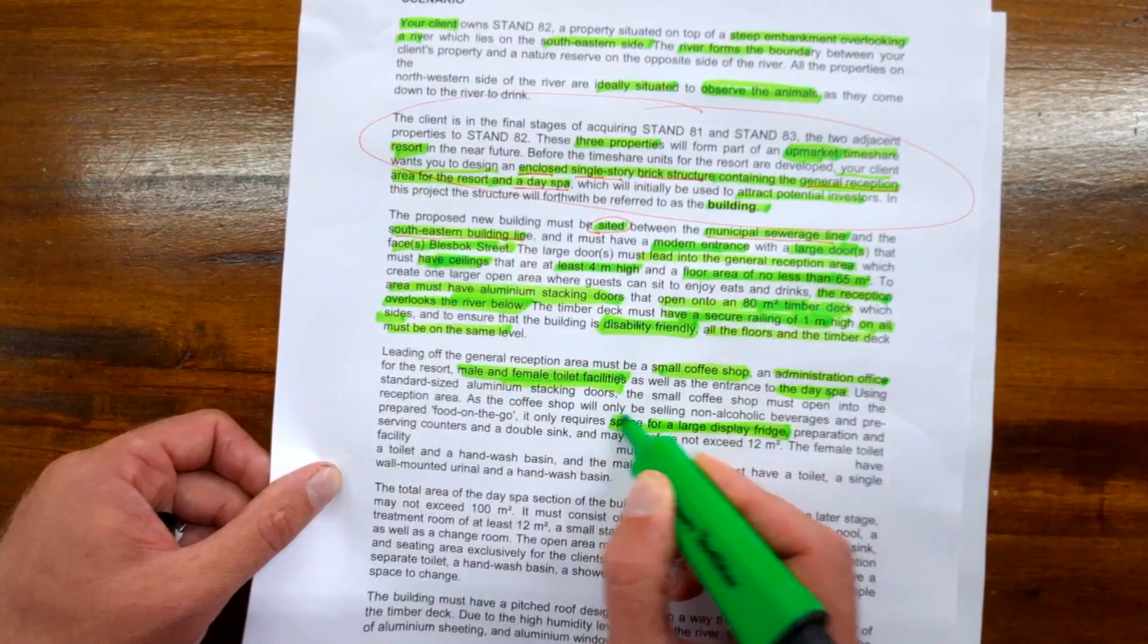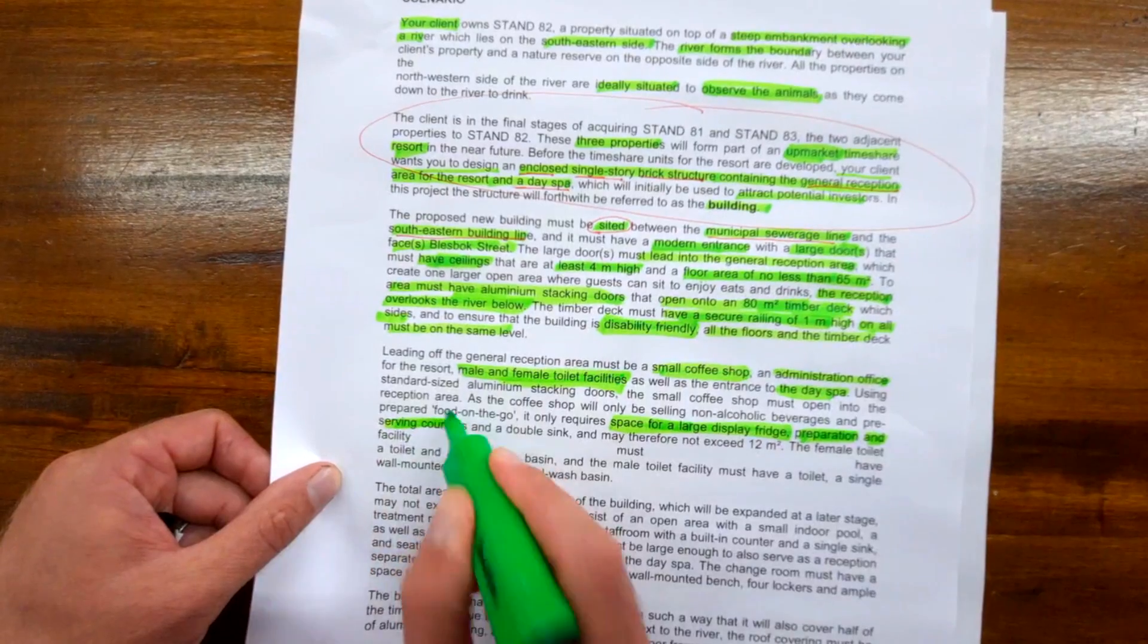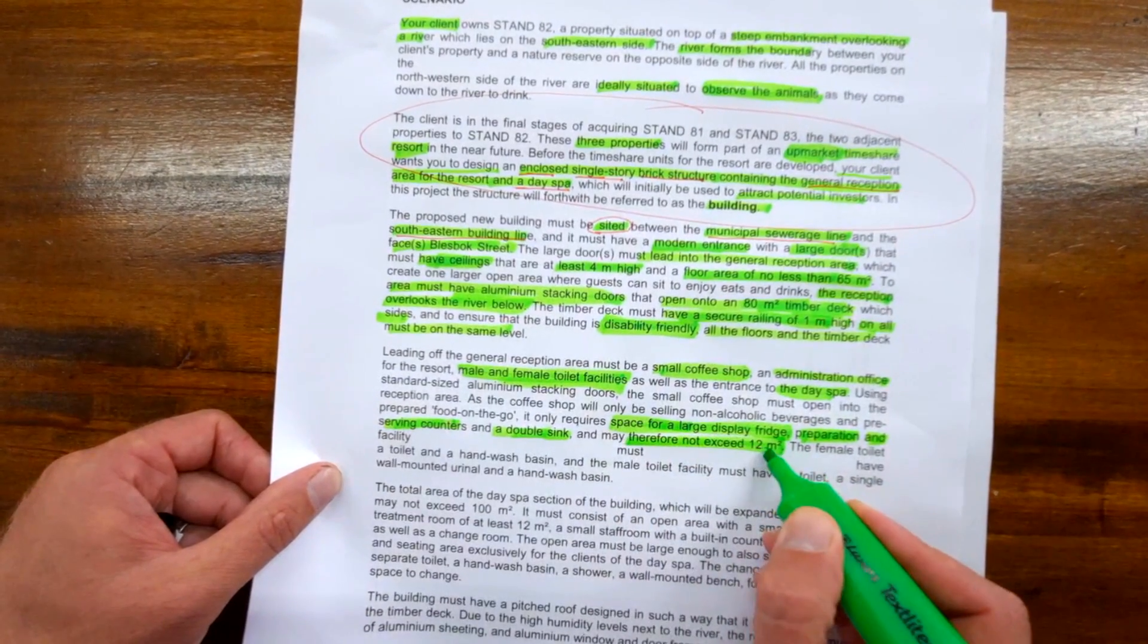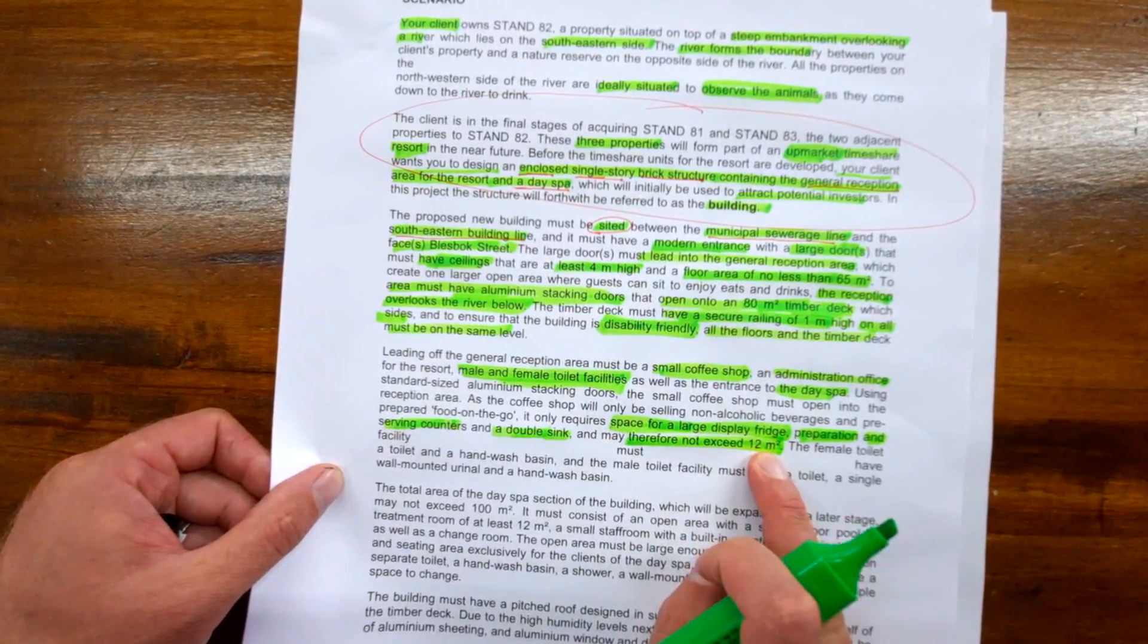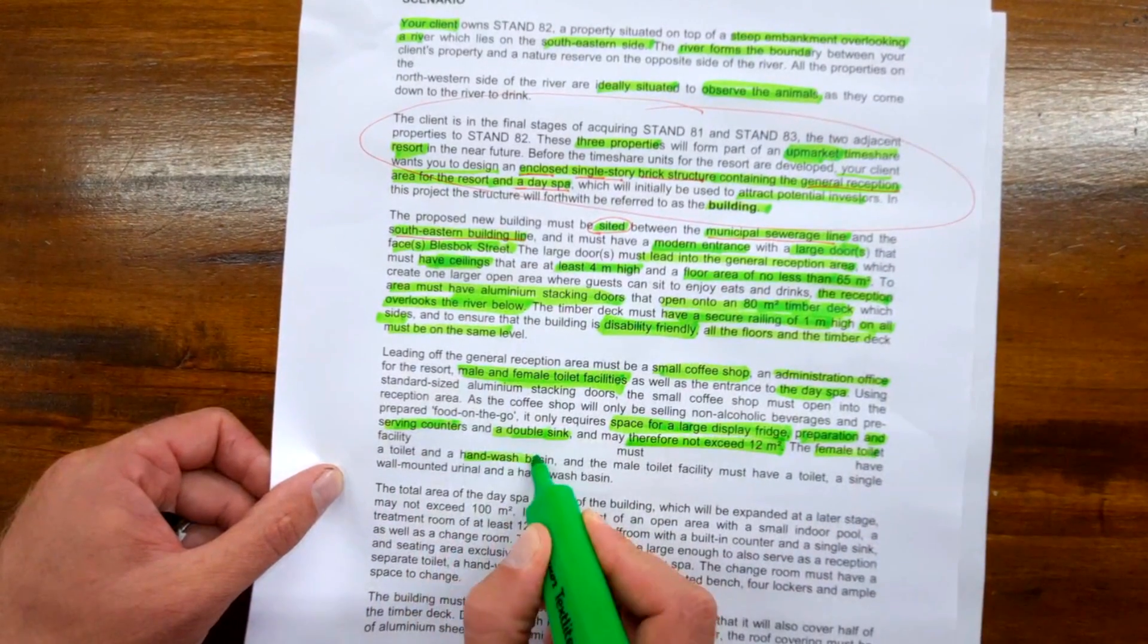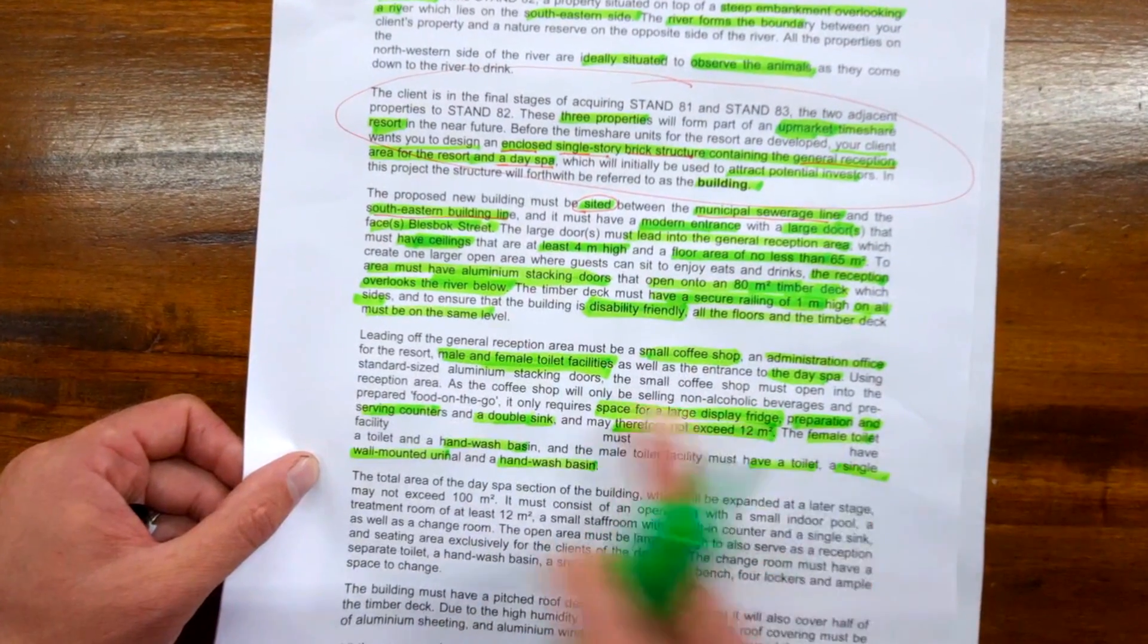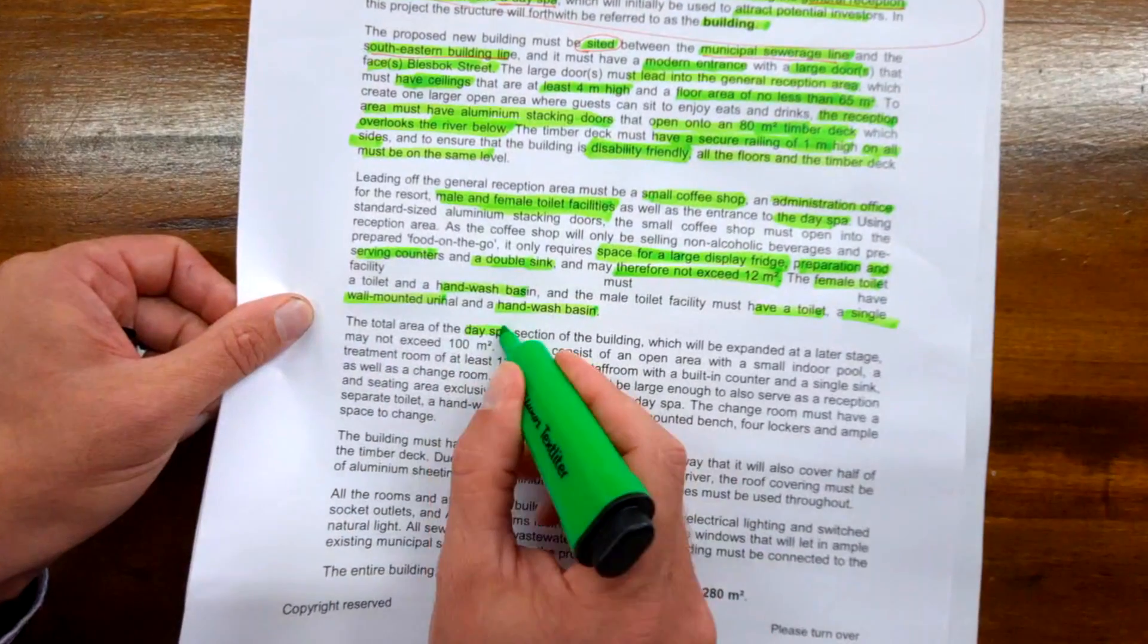Leading off the general reception area must be a small coffee shop, admin office, male and female toilet facilities, and entrance to the day spa. Using standardized aluminum stacking doors, a small coffee shop must open into the reception area. As it will sell non-alcoholic beverages and prepared food on the go, it only requires a large fridge, preparation and serving counters, a double sink, and is limited to 12 square meters.